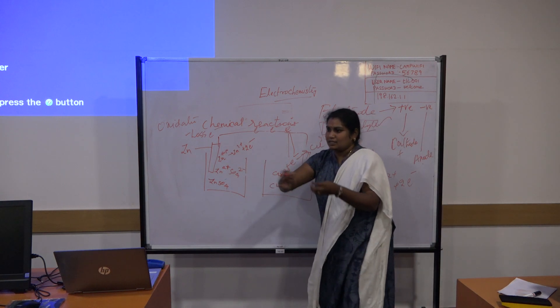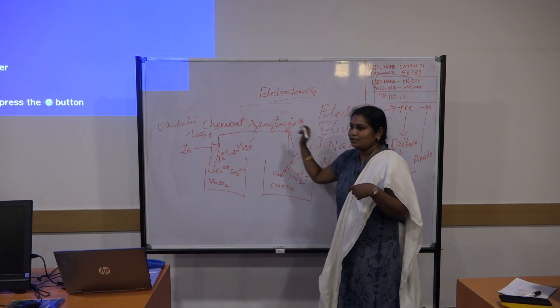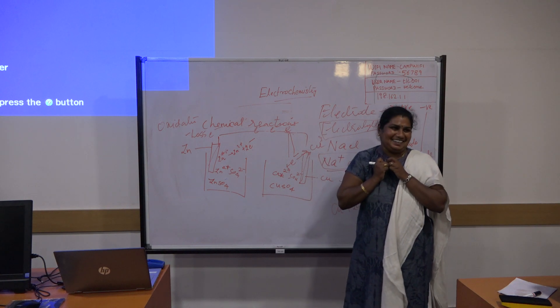So, sequentially, the size and shape of the metal will decrease. Flow of electrons is there. So, of course, there will be a flow of electricity. Okay?